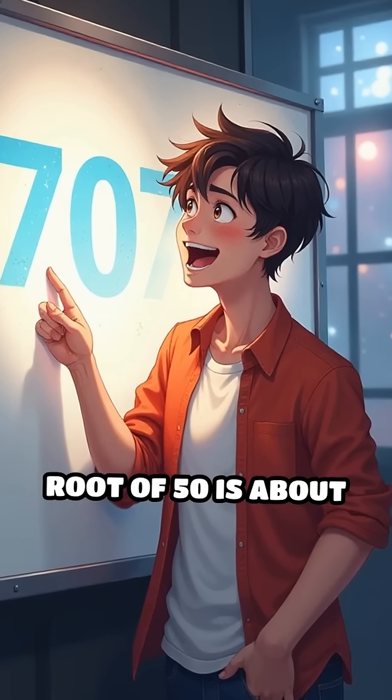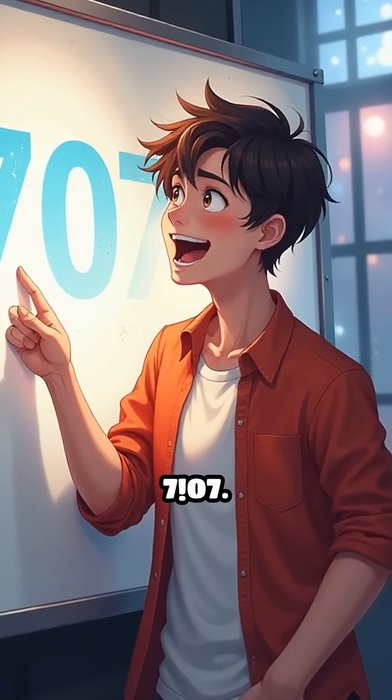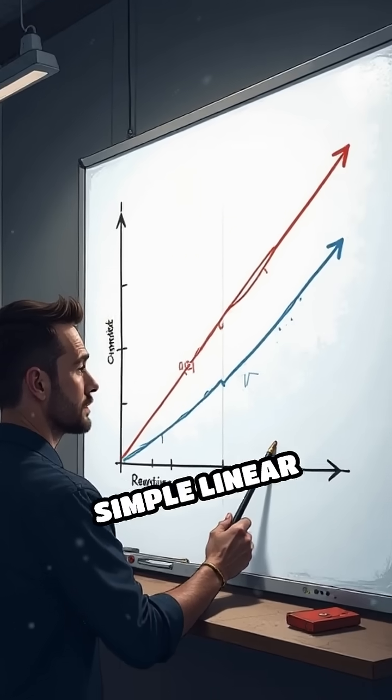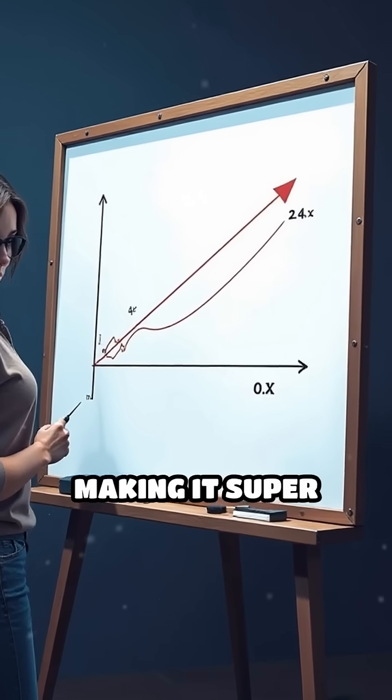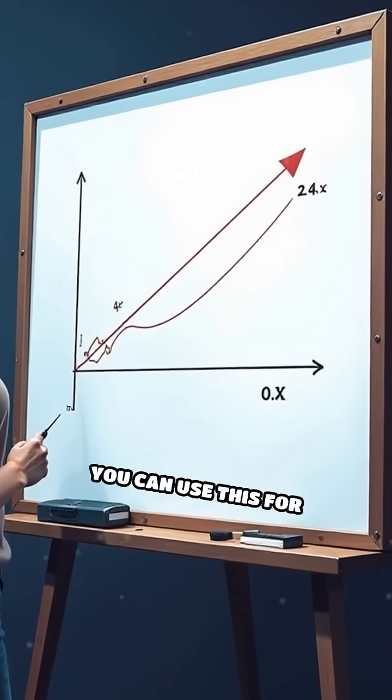The actual square root of 50 is about 7.07. This method works because it's a simple linear approximation, making it super fast and surprisingly accurate.